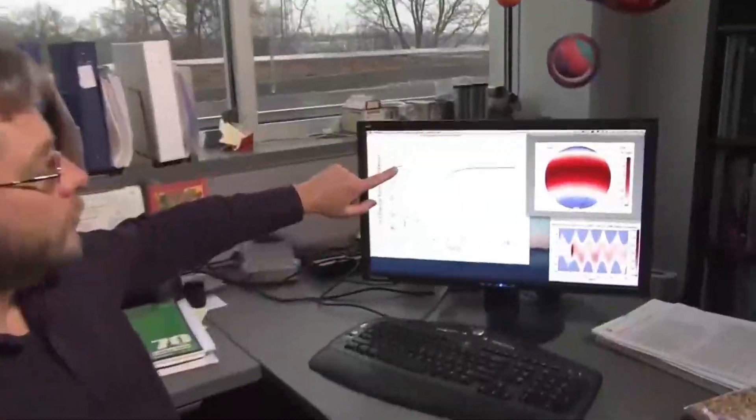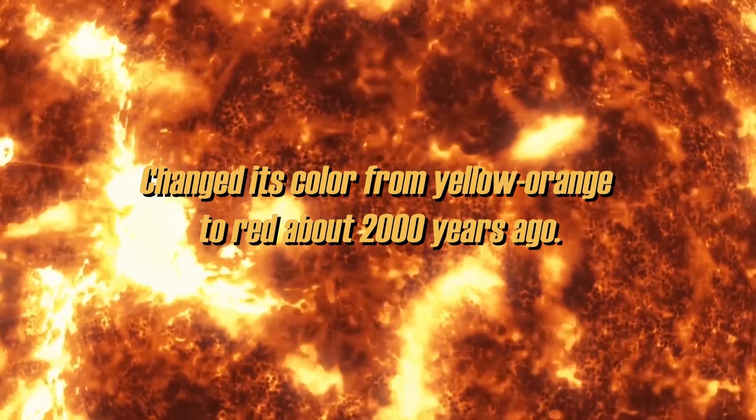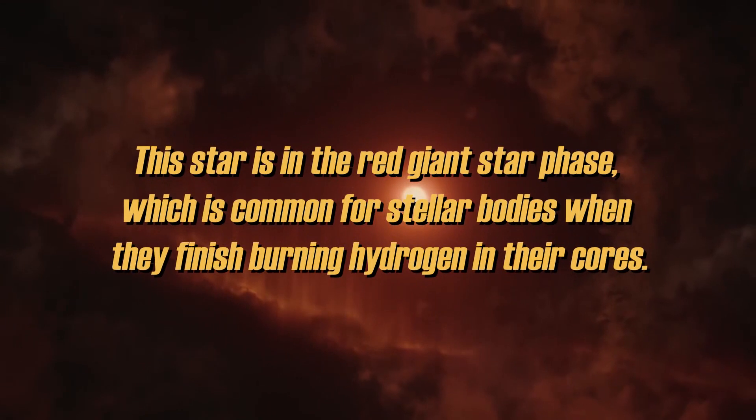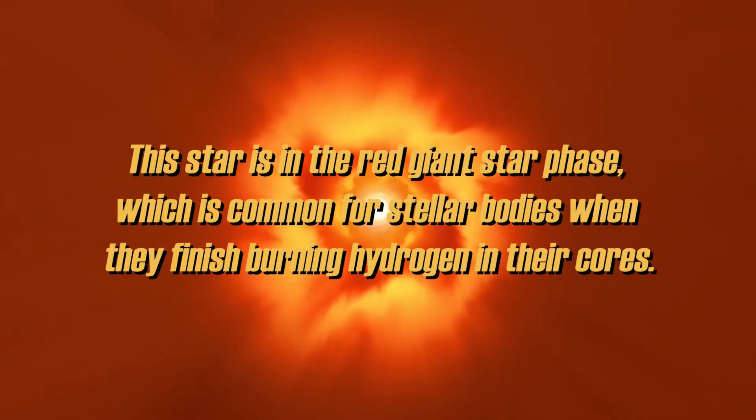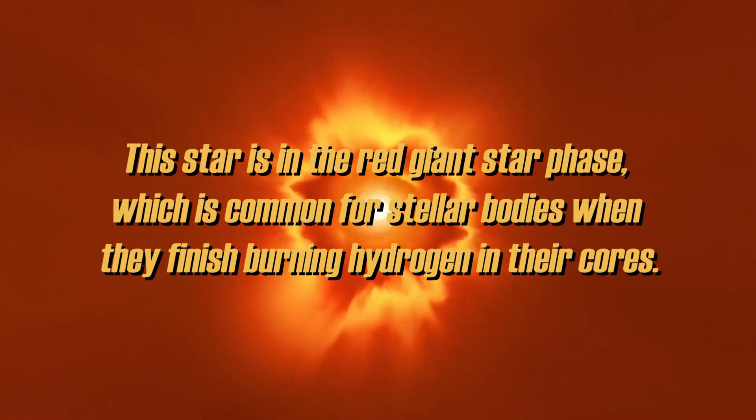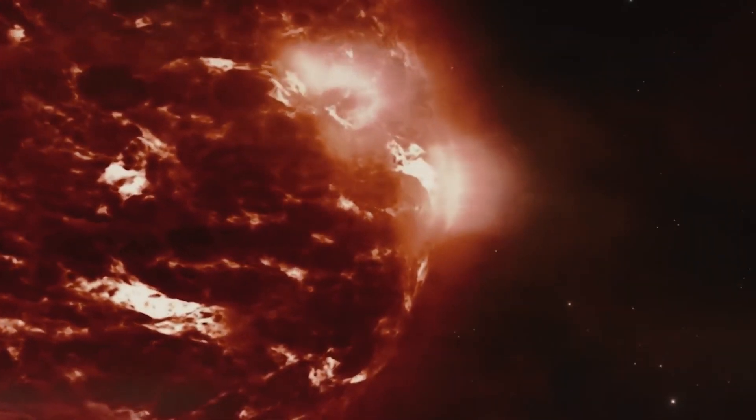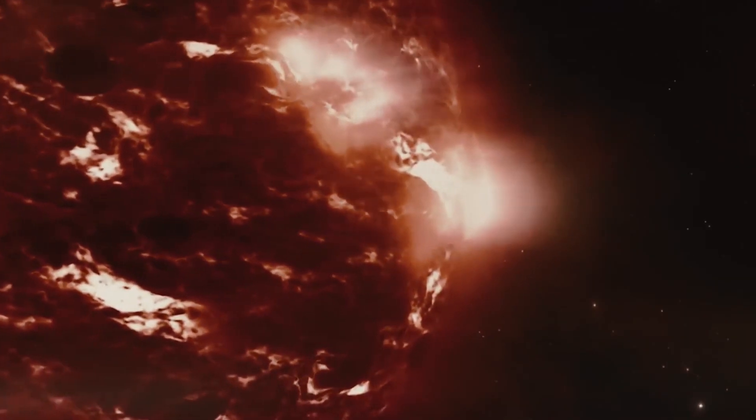A team of astronomers discovered that the star Betelgeuse changed its color from yellow-orange to red about 2000 years ago. The star is in the red giant star phase, which is common for stellar bodies when they finish burning hydrogen in their cores. This change causes the collapse of the core and the reddening of the outer layers of the star.